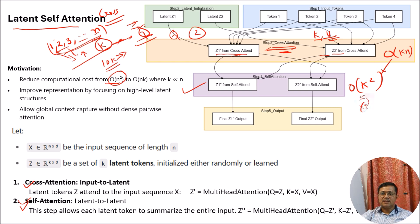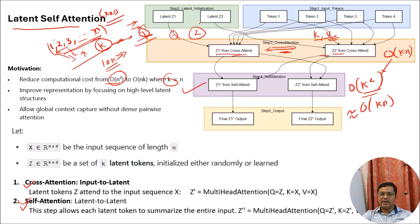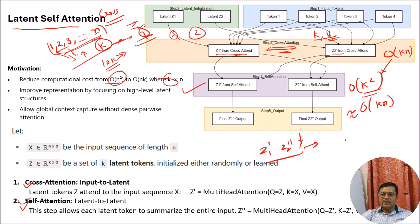The final time complexity will be equivalent to O(KN), because K² is too small — we are considering K to be very small. So in the case of latent attention: first, we calculate the latent vectors from the set of tokens; then we calculate the attention score and context vector scores for those latents; and after that, to get the interaction between the latent vectors, we again calculate self-attention. That score — called Z1 double-dash and Z2 double-dash — will actually go for all kinds of tasks like classification, regression, question answering, or summarization.